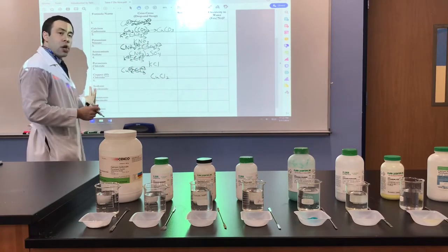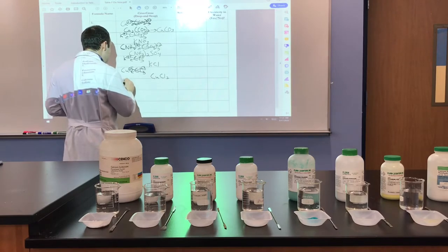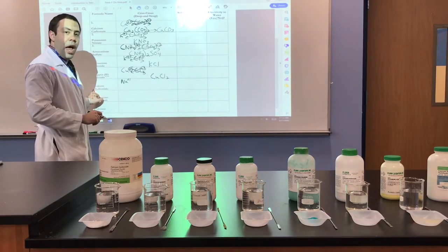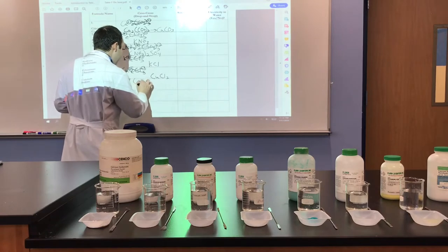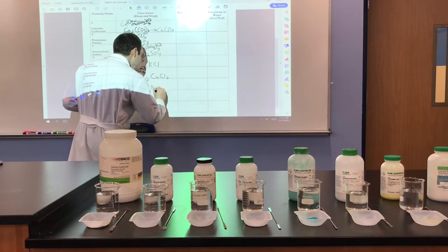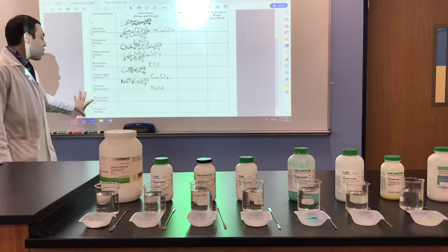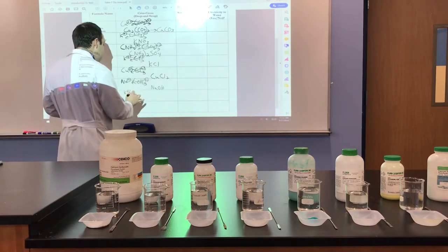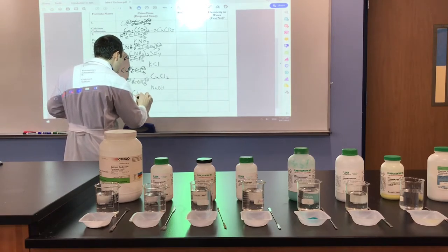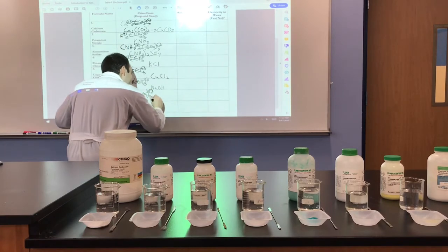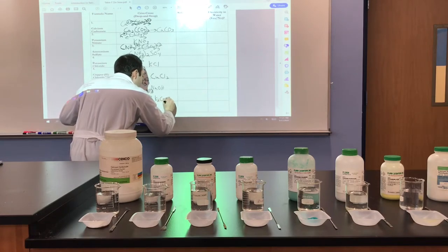For number 6, sodium is also in group 1, element number 11, with a charge of positive 1. Hydroxide is a polyatomic ion on Table E — OH, charge of minus 1. When you do the criss-cross drop-swap, you get NaOH. For number 7, potassium once again has a charge of positive 1. Chromate on Table E is a polyatomic — CrO4 in parentheses — with a charge of negative 2. When you perform the criss-cross drop-swap method, you get K2CrO4.